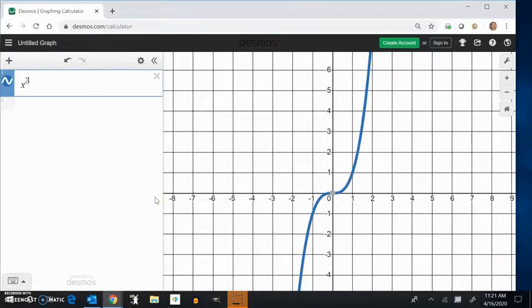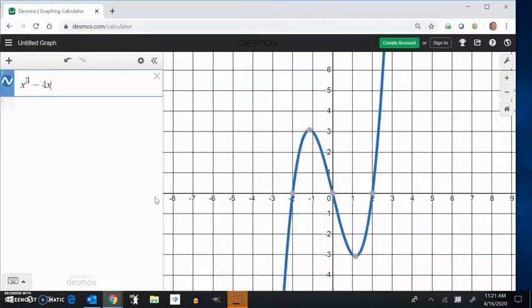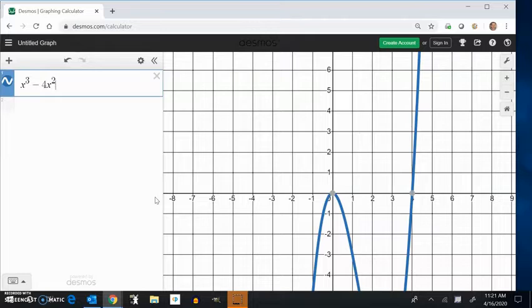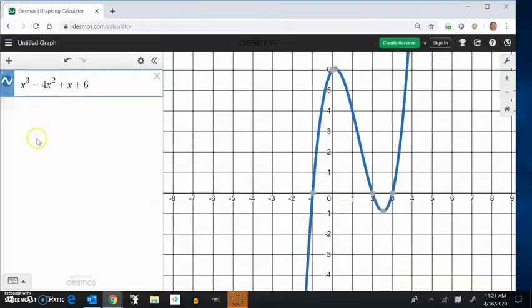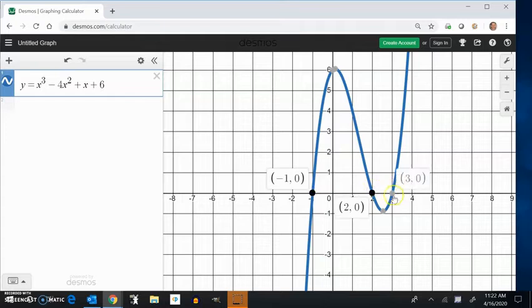So last week we asked you to practice some stuff like this. Say that y equals that. And it's cubic, right? Third power. And it looks like it has these three zeros here, these three x-intercepts. So one's at negative one, one at two, and one at three.